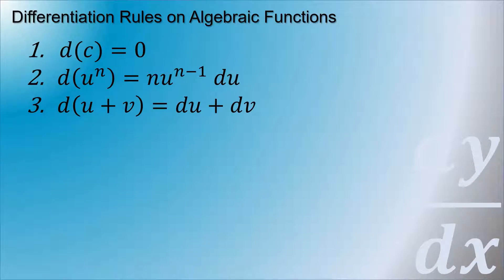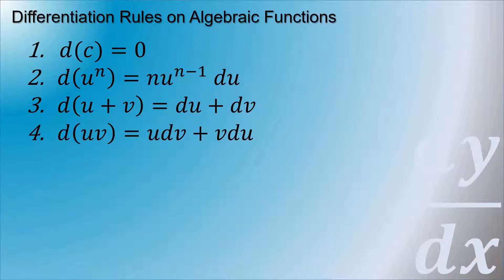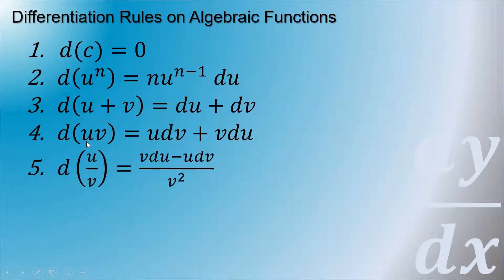The third rule: the derivative of u plus v is equal to du plus dv, the derivative of u plus the derivative of v. For multiplication, the derivative of u times v equals u times dv plus v times du — take the first variable times the derivative of the second, plus the second variable times the derivative of the first. The division rule: the derivative of u divided by v equals v times du minus u times dv, all over v squared.